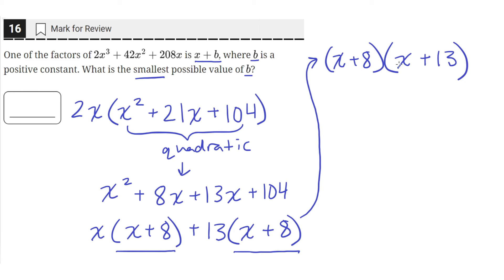So then let's plug this factored expression back into our original expression. So we'll have 2x times x plus 8, and then x plus 13. So this is a completely factored form of our original expression up here.